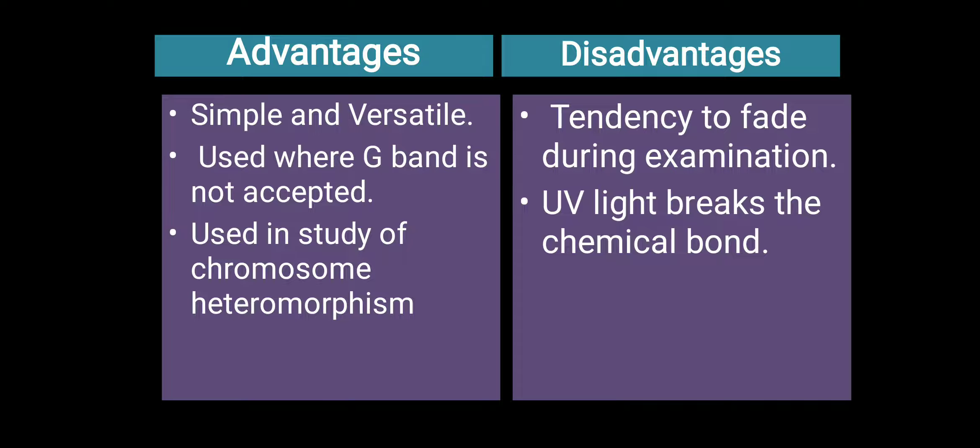The disadvantages of Q banding are that because quinacrine mustard is used under UV light, when normal light is switched on, photo degradation occurs, causing the fluorescence to fade during examination, which can lead to false positive or false negative results. Additionally, UV light might break the chemical bond formed between the stain and the nucleotide bases.